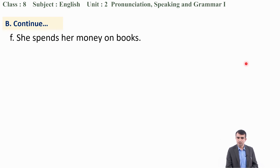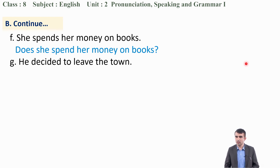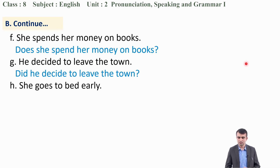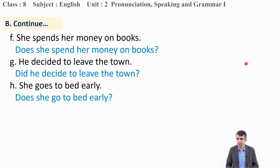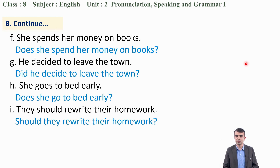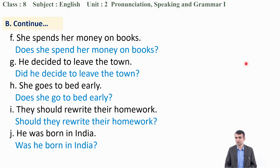F: 'She spends her money on books.' 'Spends' has S inflection, so: 'Does she spend her money on books?' G: 'He decided to leave the town.' Past tense, so: 'Did he decide to leave the town?' H: 'She goes to bed early.' — 'Does she go to bed early?' I: 'They should write their homework.' — 'Should they write their homework?' J: 'He was born in India.' — 'Was he born in India?'